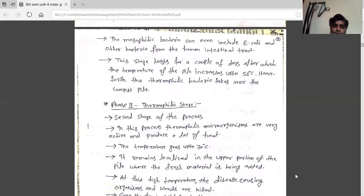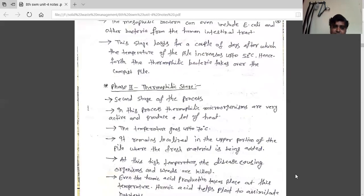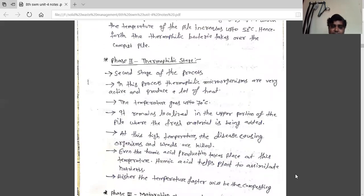Phase two is the second stage of the process. In this phase, thermophilic microorganisms are very active and produce a lot of heat. The temperature goes up to 70 degrees Celsius. It remains localized in the upper portion of the pile where fresh material is being added.